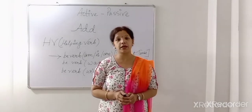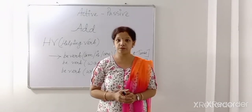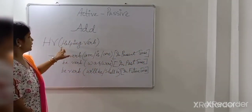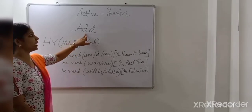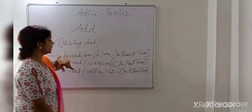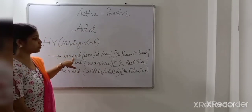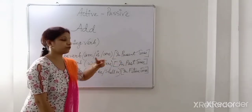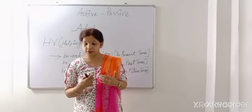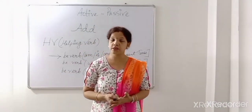Let's have a look at the blackboard at what I have written about the helping verb. In passive voice, we have to add be verbs. If we are talking about present tense — simple present or present continuous — we need these two be verbs.